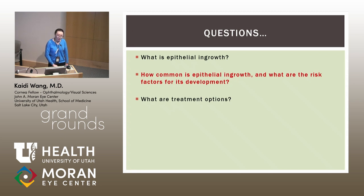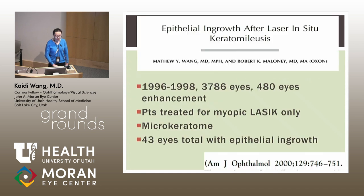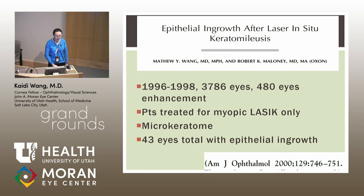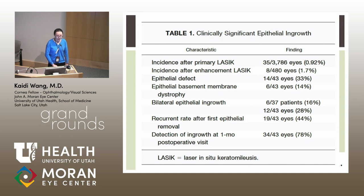How common is epithelial ingrowth and what are the risk factors? The first large manuscript I found detailing the rates of epithelial ingrowth was published in 2000 — a retrospective large case series of over 3,000 patients who received LASIK, 480 of whom received retreatment between 1996 to 1998 at one center. These patients were treated for myopic LASIK only and received microkeratome LASIK. There were 43 eyes total out of this number that had epithelial ingrowth. This paper identified several risk factors, including having an epithelial defect at the time of flap creation or EBMD.